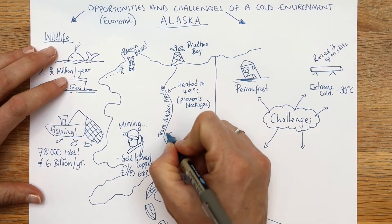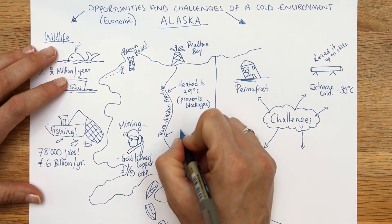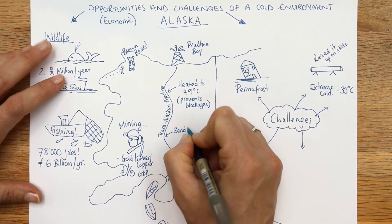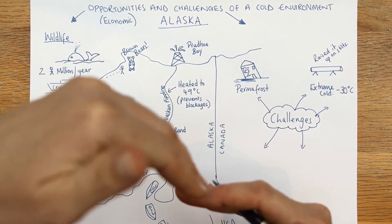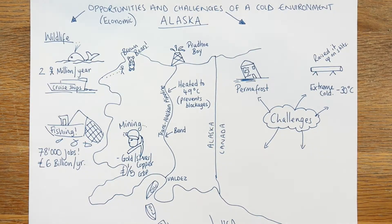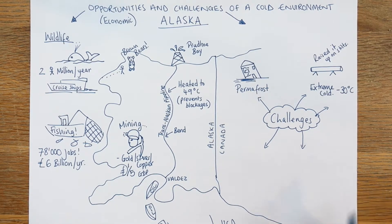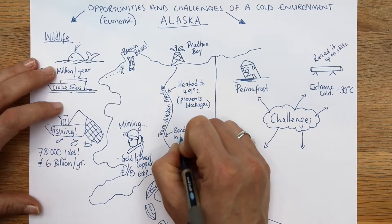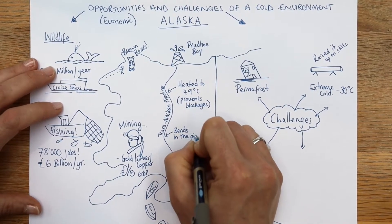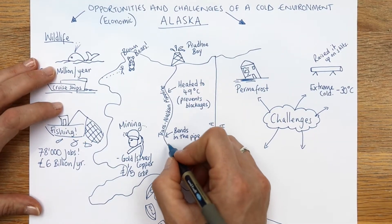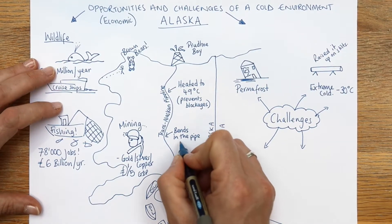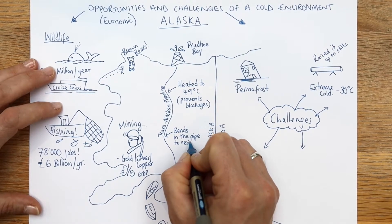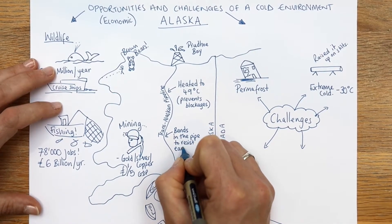There are also deliberate bends built into the pipe, giving it a natural kink. This is because there's a risk of earthquakes in Alaska, so the bends help the pipeline resist seismic movement. There are a lot of management strategies that have been thought through for this pipeline.